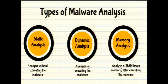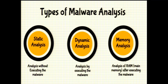Coming to the types of malware analysis — most articles and books talk about two types, but I'll cover a third as well. There are three types: static analysis, dynamic analysis, and memory analysis. Static analysis is analyzing the malware without executing it. Dynamic analysis involves executing the malware in a virtualized environment and monitoring its activity. Memory analysis involves taking a memory image of the infected system after execution and analyzing it for forensic artifacts. These give different perspectives: static gives a pre-execution view, dynamic gives a during-execution view, and memory analysis gives a post-mortem forensic perspective.